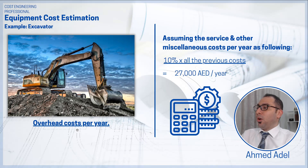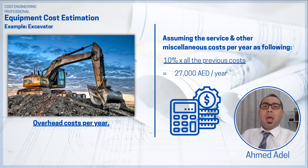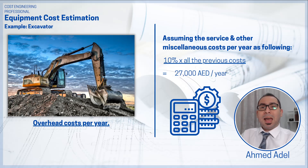The fifth criterion is overhead costs. I'll add 10% of all previous costs, which comes to 27,000 dirhams per year. This covers things like equipment insurance, license registration, and a share of company overhead — for example, a plant manager assigned to oversee company assets.